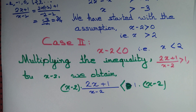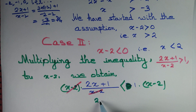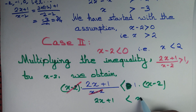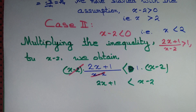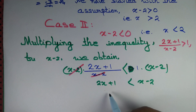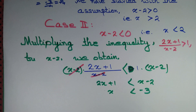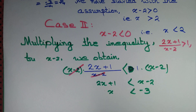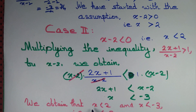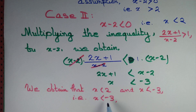We cancel x minus 2 from numerator and denominator and we have 2x plus 1 is less than x minus 2. Putting variables on the left and constants on the right: 2x minus x equals x, and minus 2 minus 1 is minus 3. So we must have x less than minus 3. Since both x less than 2 and x less than minus 3 must hold, we conclude x has to be less than minus 3.